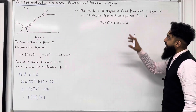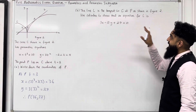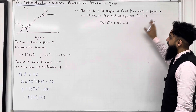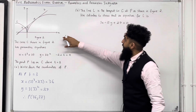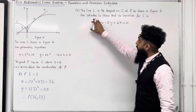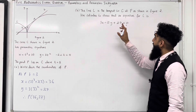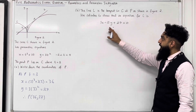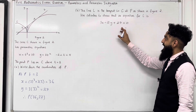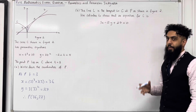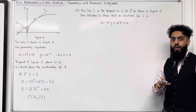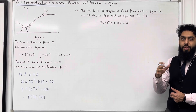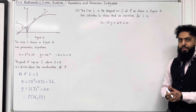Part B: the line L is a tangent to C at the point P as shown in figure 2. Use calculus to show that an equation for L is 3x minus 5y plus 27 equals 0. Please pause the video, write your complete solution, and once you've got your solution, play the video.